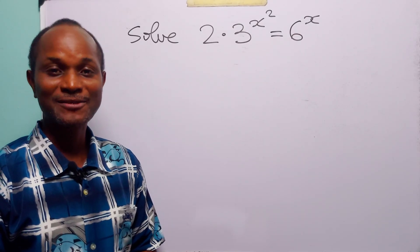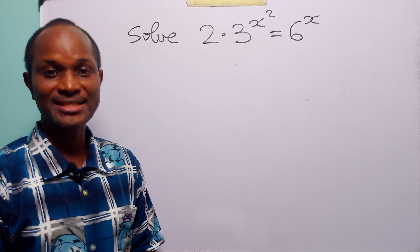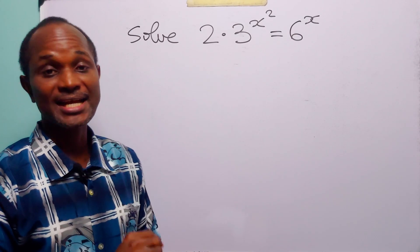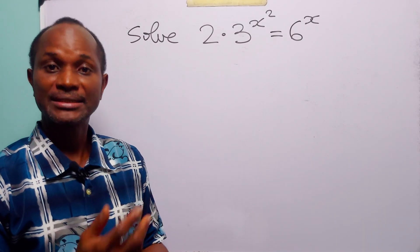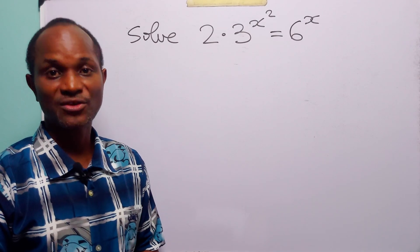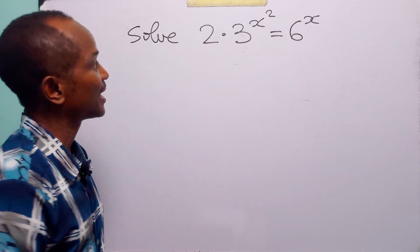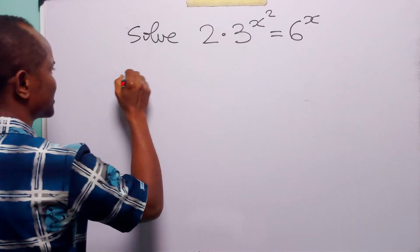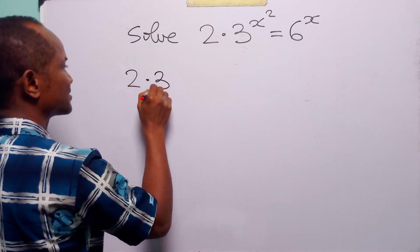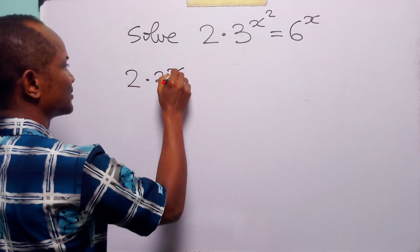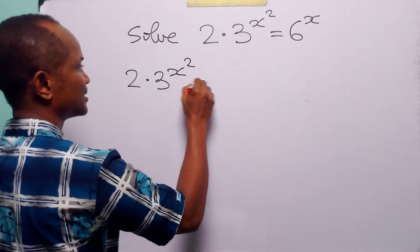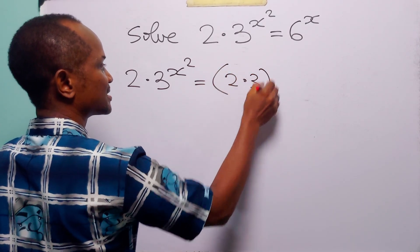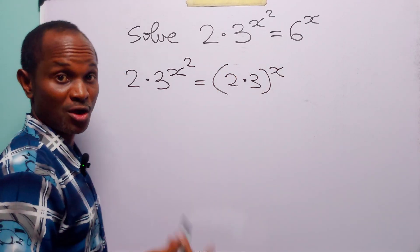Hello and welcome. In this math tutorial, our task is to find the non-integer root of this exponential equation. There are several ways of solving this problem. We can decide to start by rewriting this equation as 2 times 3 to the power x squared is equal to 2 times 3 to the power x.